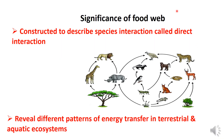Next, the significance of the food web. The food web is constructed to describe species interactions, called direct interactions.